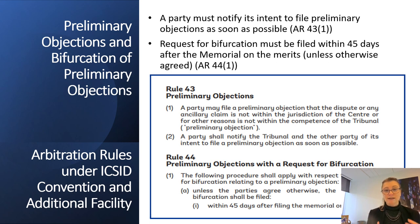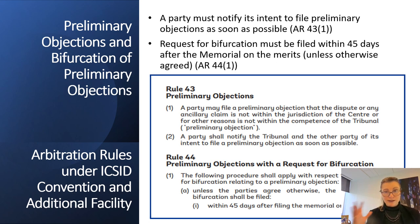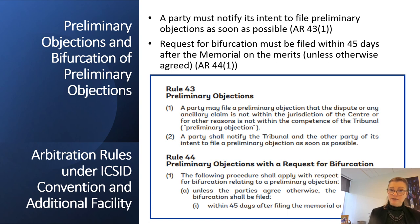The revised rules contain detailed rules on preliminary objections and bifurcation in Rules 42 to 45. These new provisions ensure that preliminary objections and requests for bifurcation are raised in a timely manner and are dealt with efficiently following a clear process. A party must notify its intent to file preliminary objections as soon as possible, typically at the first session of the tribunal. If the parties do not agree on bifurcation at the first session, the request for bifurcation of a preliminary objection must be filed within 45 days after the filing of the memorial on the merits.